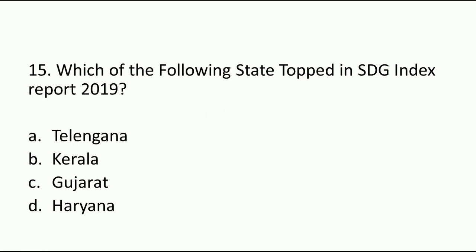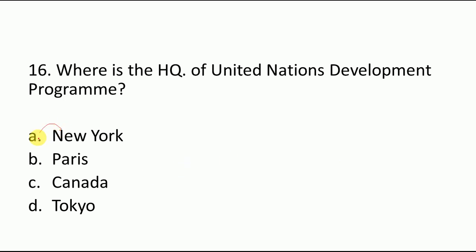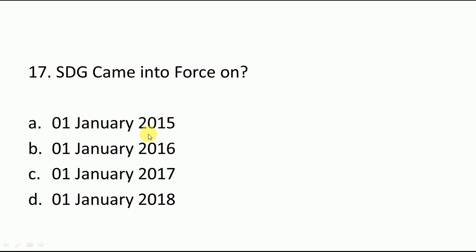Which state topped the SDG Index Report 2019? Very important question — you have to tell which state topped. The correct answer is Kerala, as per the NITI Aayog report. The UNDP also released a report in which Telangana was the best performing among young states. Telangana is called a young state because it was separated from Andhra Pradesh on 2nd June 2014. The headquarters of UNDP is in New York. The SDGs came into force and were officially implemented from 1st January 2016.